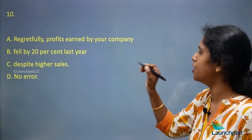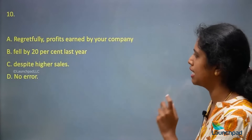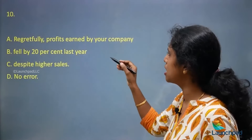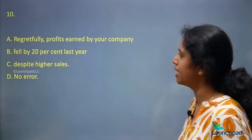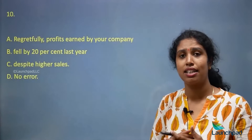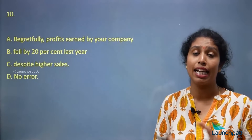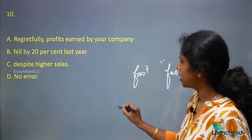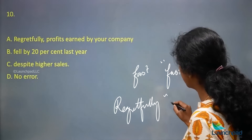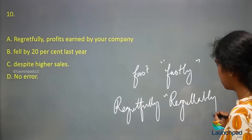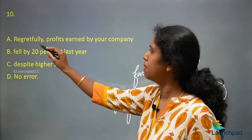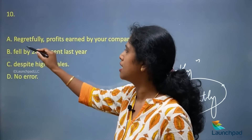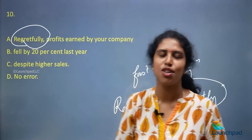Last question: 'Regretfully, profits earned by your company fell by 20% last year despite higher sales.' Grammatically this looks right, but in English there are certain words which cannot be used in alternate forms. For example, 'fast' cannot become 'fastly.' Similarly, 'regretfully' cannot be used here — the correct word is 'regrettably.' So the sentence should read: 'Regrettably, profits earned by your company fell by 20% last year despite higher sales.' Option A is the right answer.